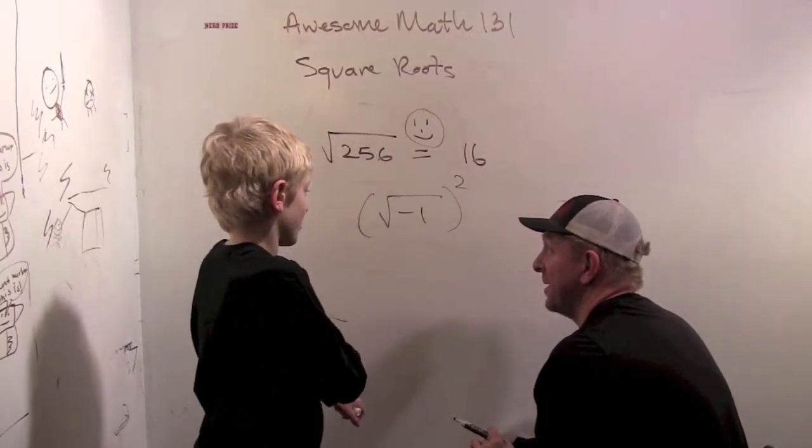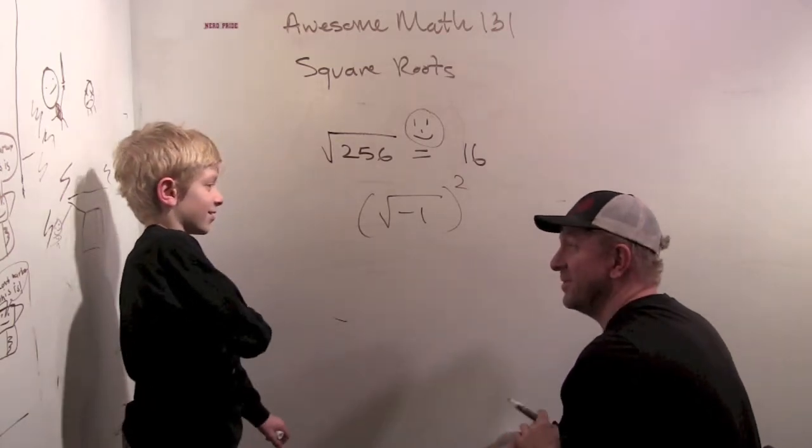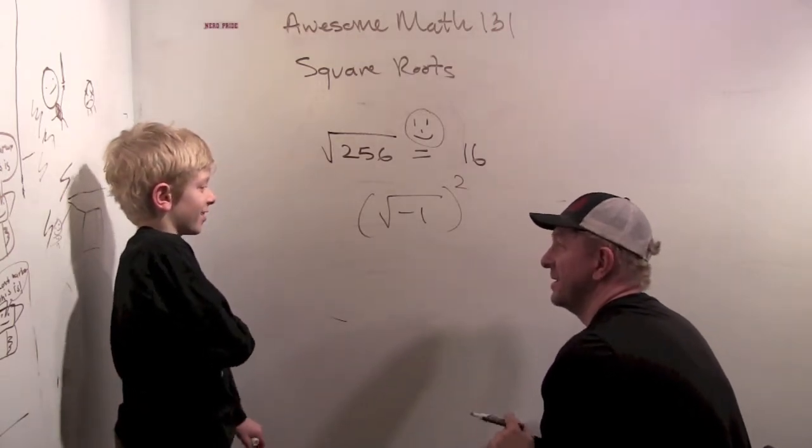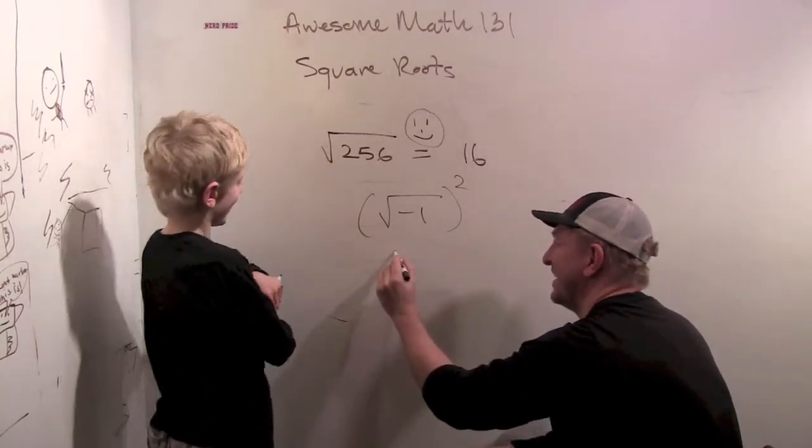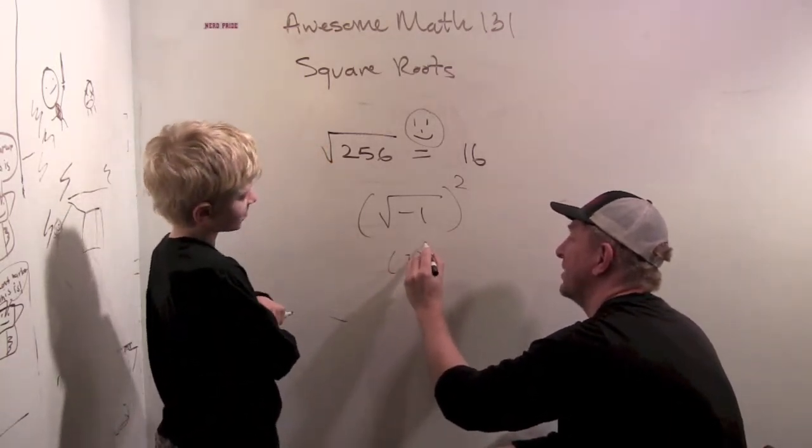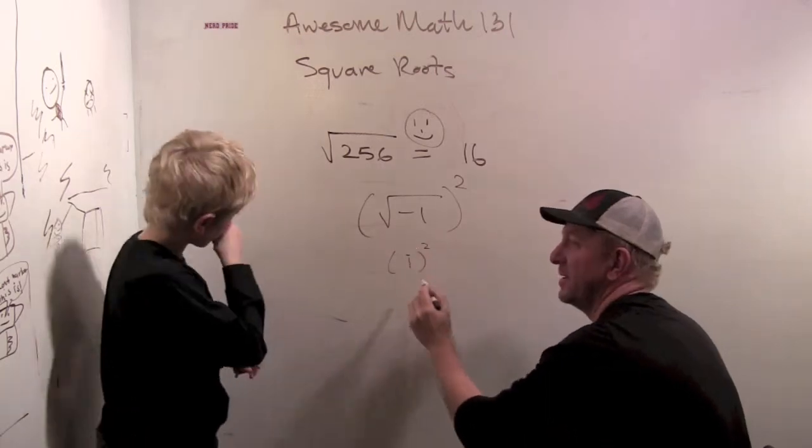I know how to do square root minus 1. What? You do? What is it? It's i. You? i. i squared. So you've seen this a little bit.